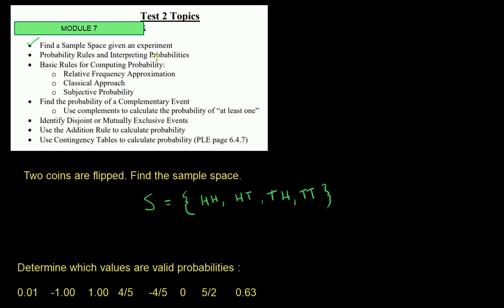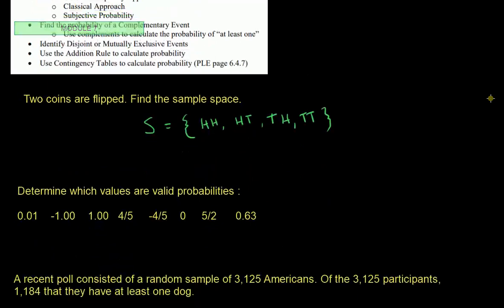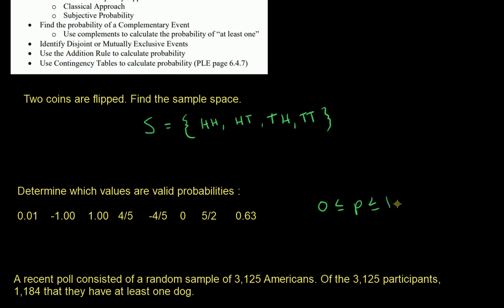Probability rules and interpreting probabilities. We need to determine whether or not values are probabilities. There is basically one rule: probabilities must be between 0 and 1, inclusive. Any number outside of 0 and 1 is not a valid probability. Values closer to 0 are near impossible, and if it equals 0, it is impossible. Values closer to 1 are very possible, and if it equals 1, it's guaranteed.